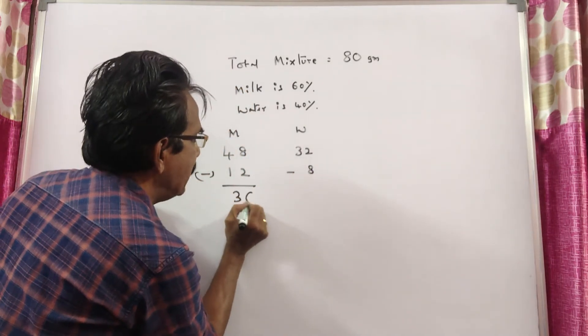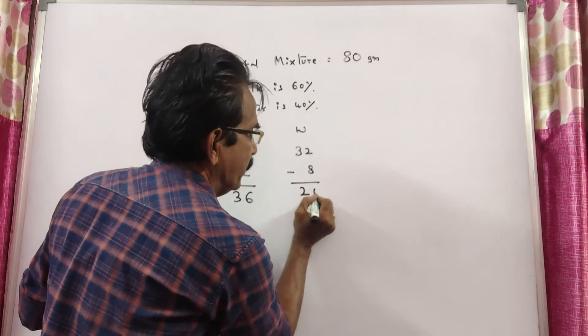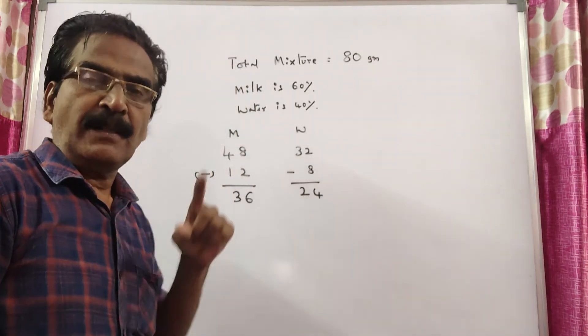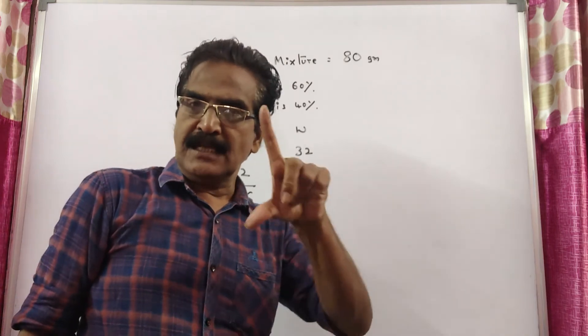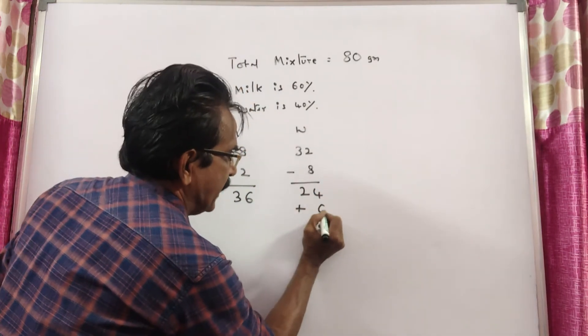Now, milk is 36, water is 24. After that, 6 grams of pure water is added.